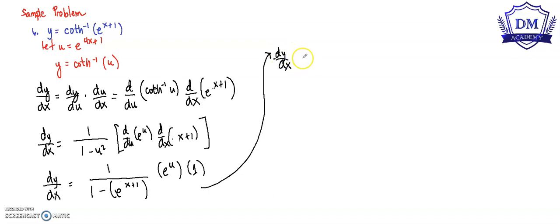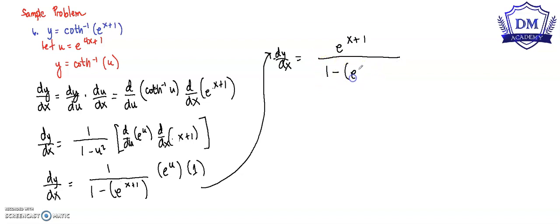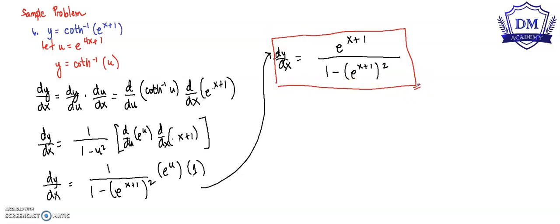Our derivative of y with respect to x is equal to e raised to x plus 1 all over 1 minus the quantity of e raised to x plus 1, quantity squared. This is the derivative of our given function with respect to x. Thank you for watching.